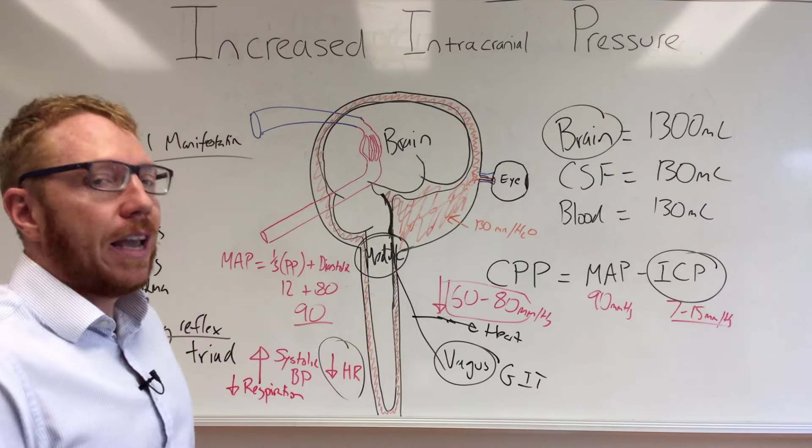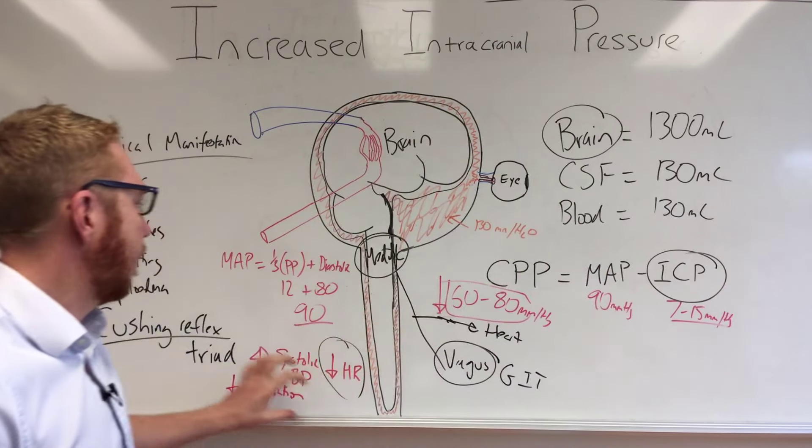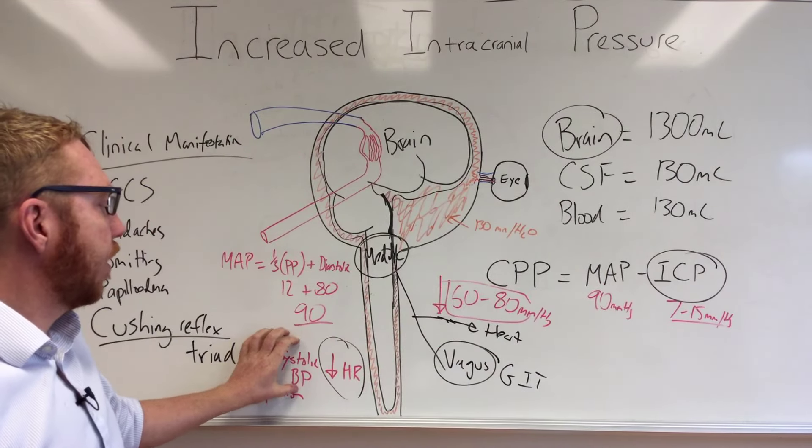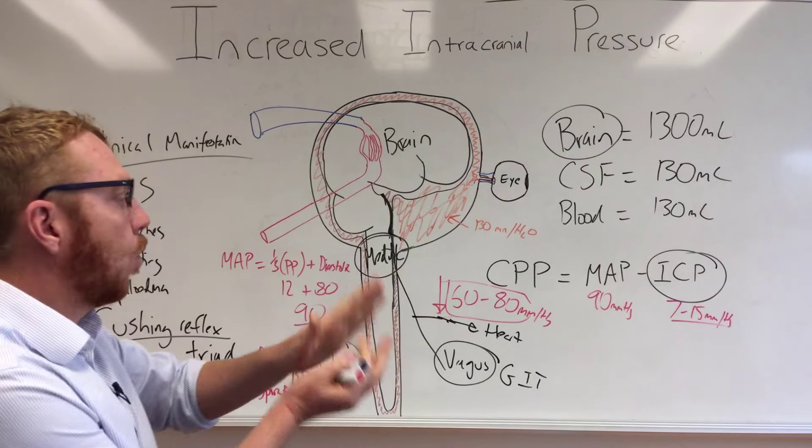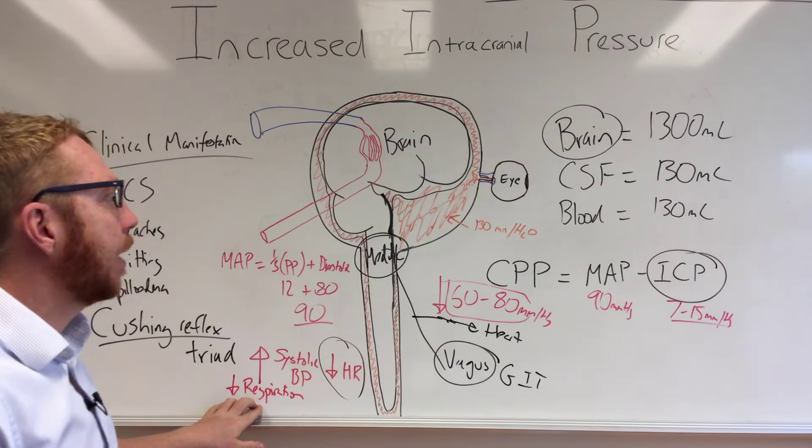That's why in the Cushing reflex, as the ICP continues to go up, we see systolic blood pressure increasing, heart rate dropping, widening of the pulse pressure, and respiratory rhythm and rate starts to become affected.